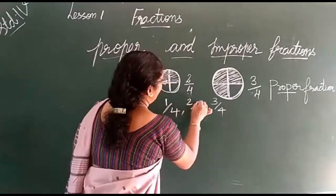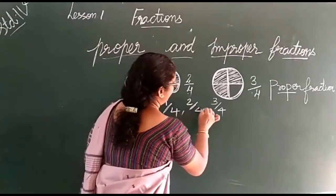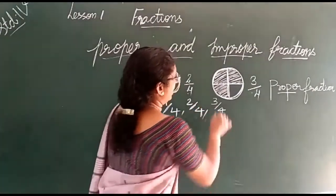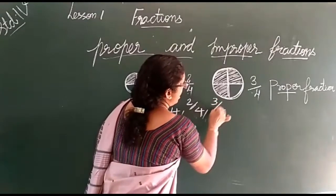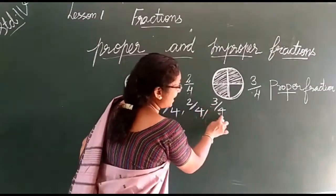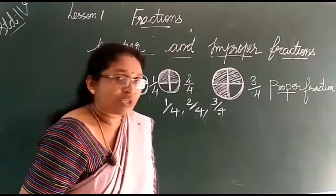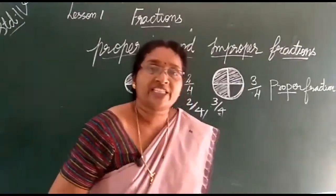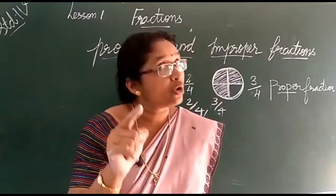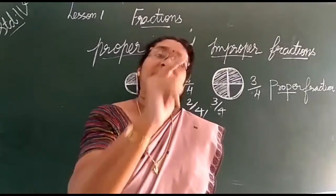Next, 2 by 4 — numerator is less than denominator. That's 3 by 4: numerator is 3, denominator is 4, so numerator is less than denominator. In a proper fraction, numerator is less than denominator — denominator is greater than numerator.